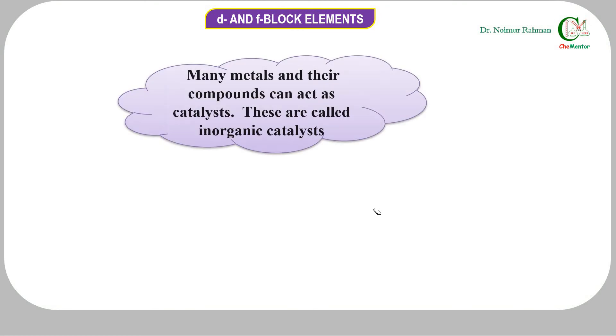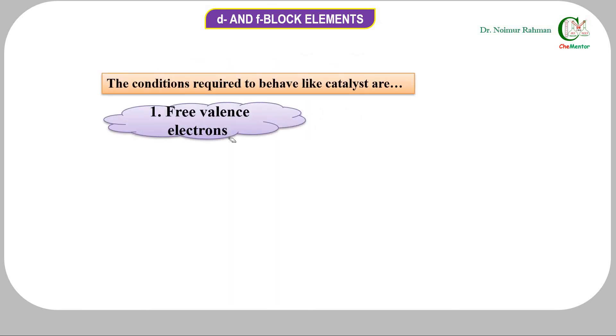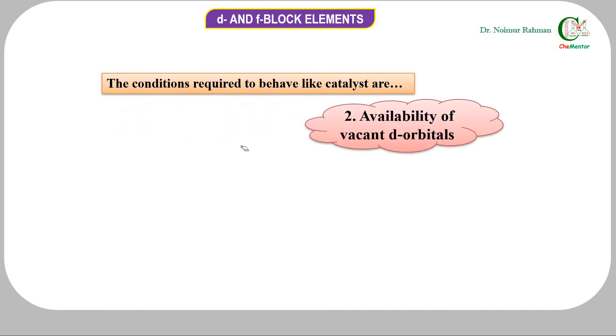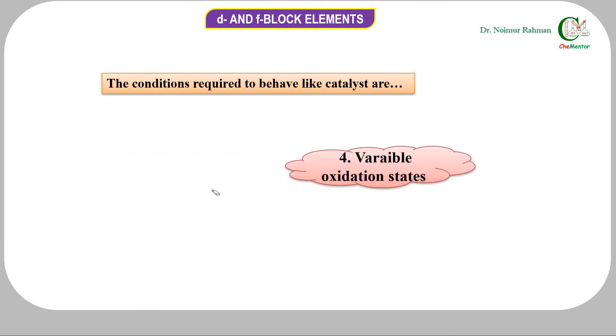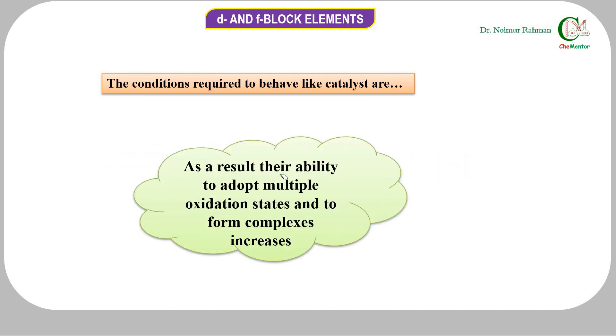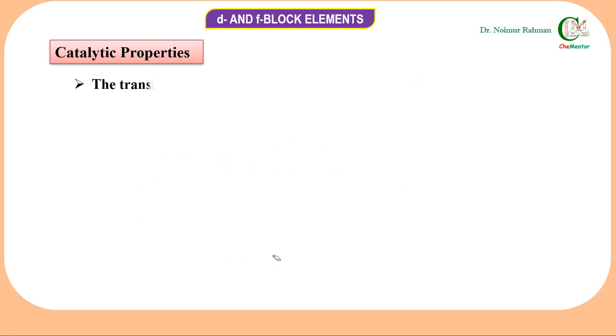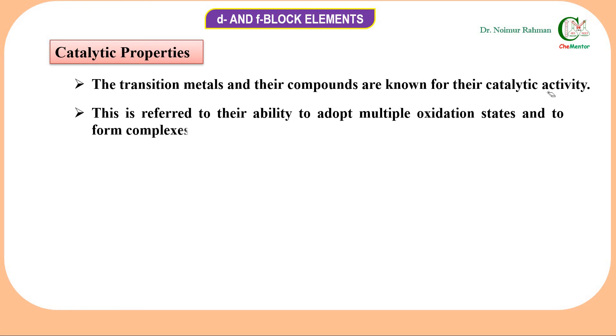So many metals and their compounds can act as catalysts, called inorganic catalysts. The conditions required to behave like a catalyst are: free valence electrons, availability of vacant d orbitals, large surface area, and variable oxidation states. As a result, their ability to adopt multiple oxidation states and to form complexes increases.